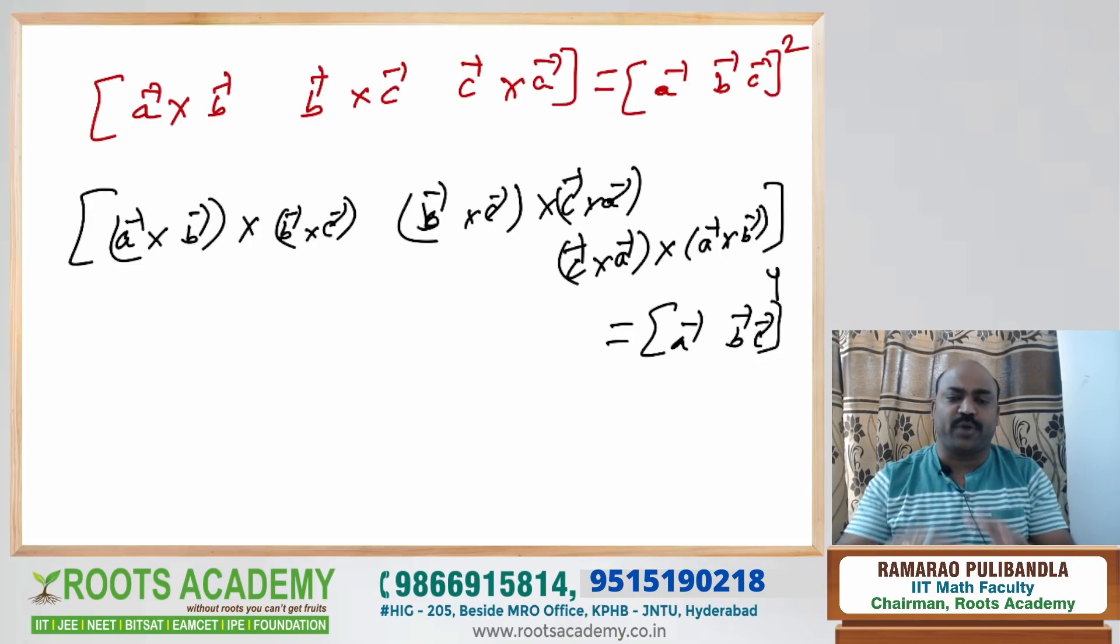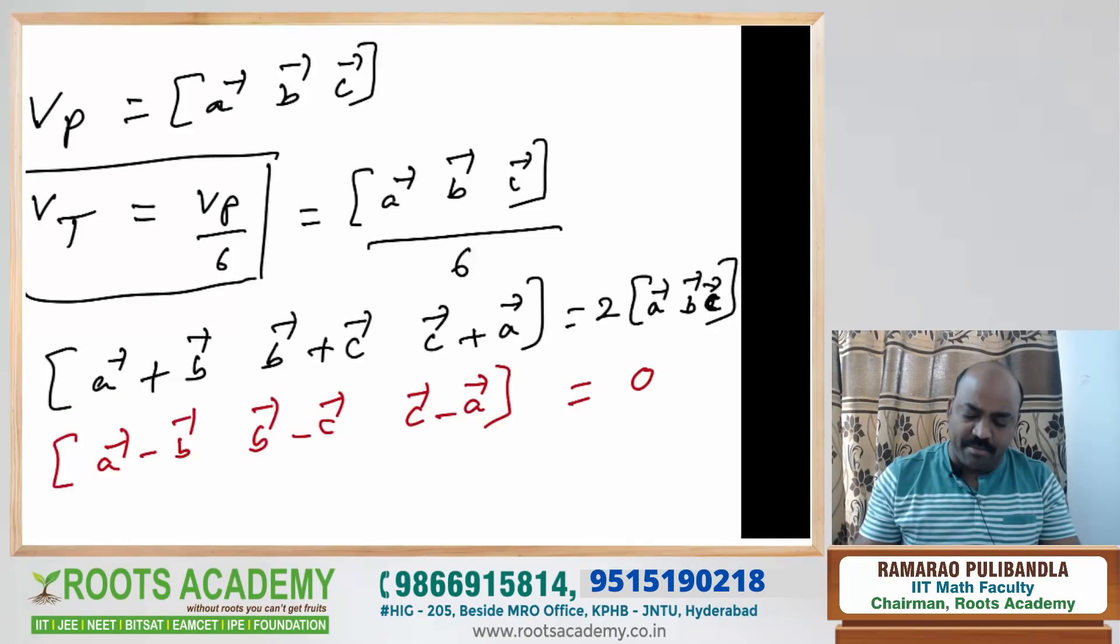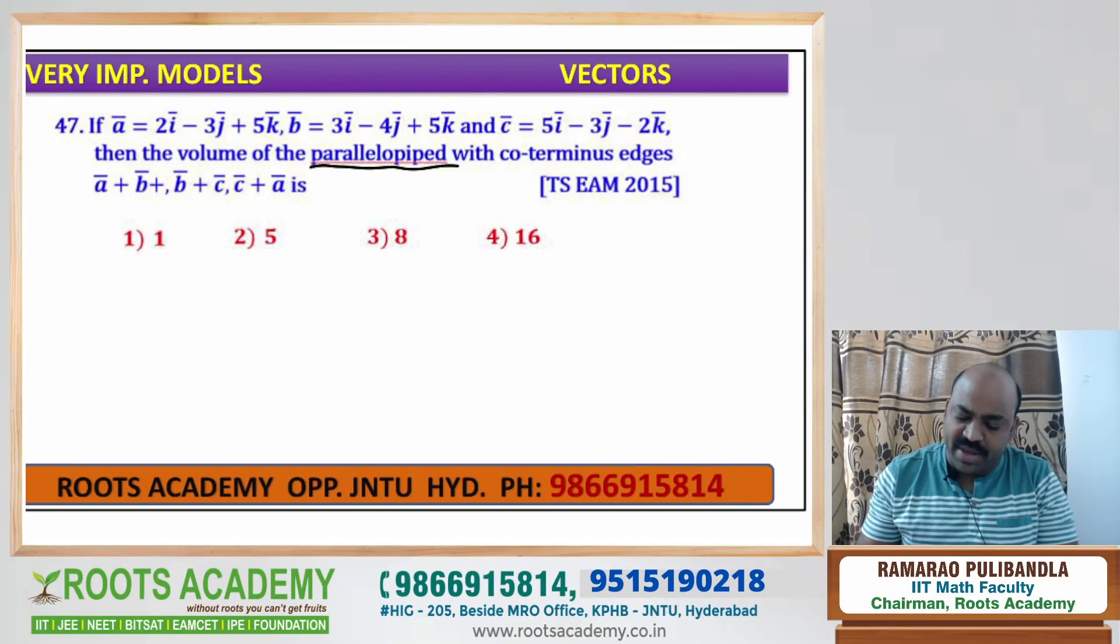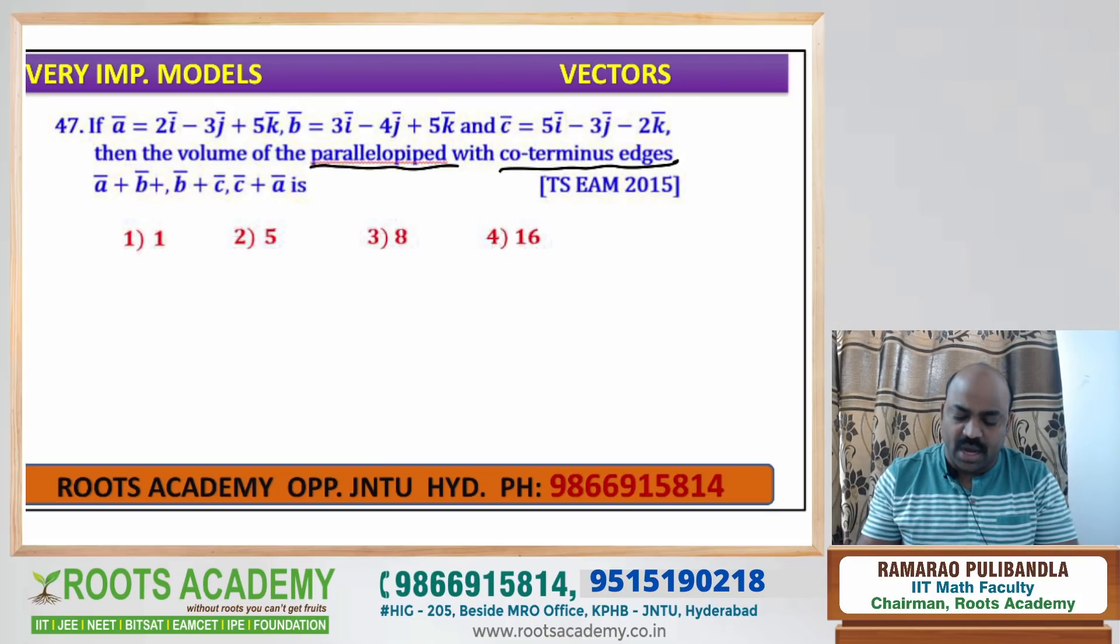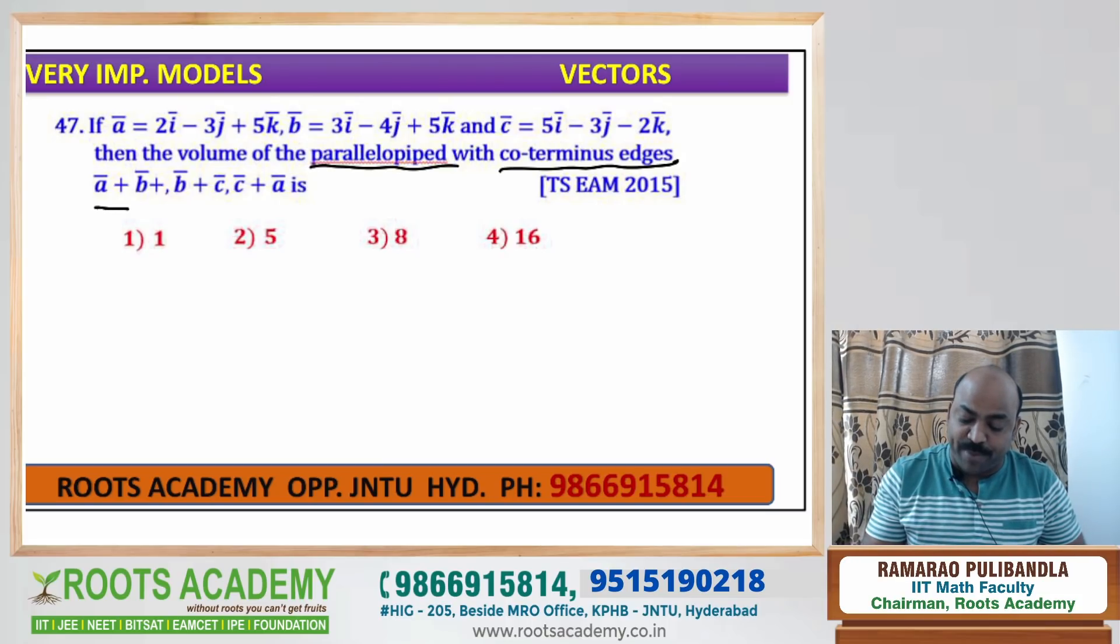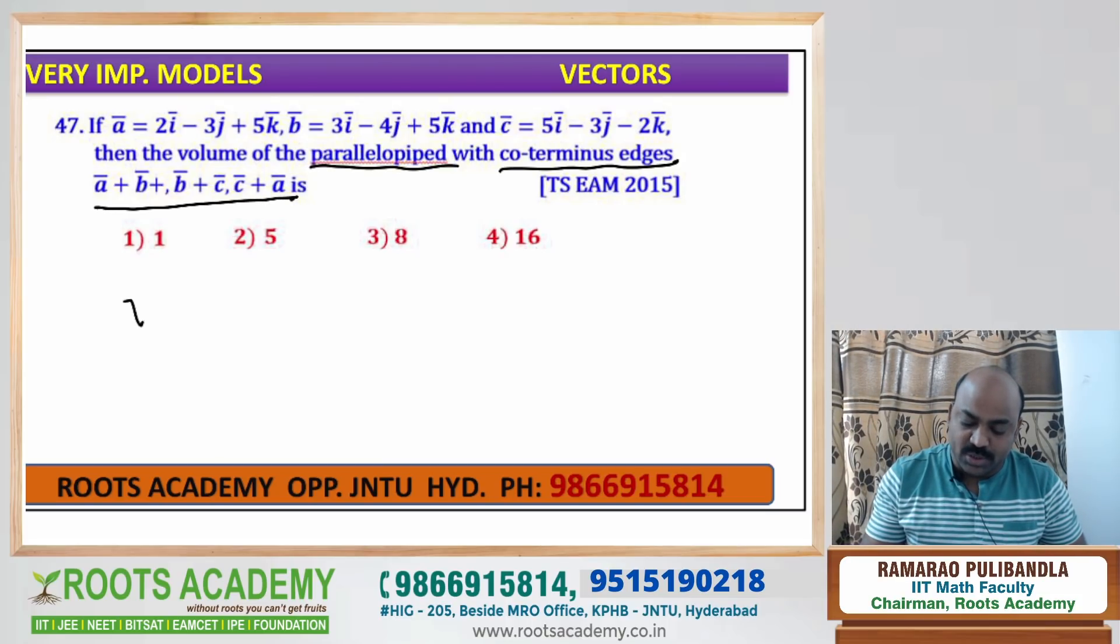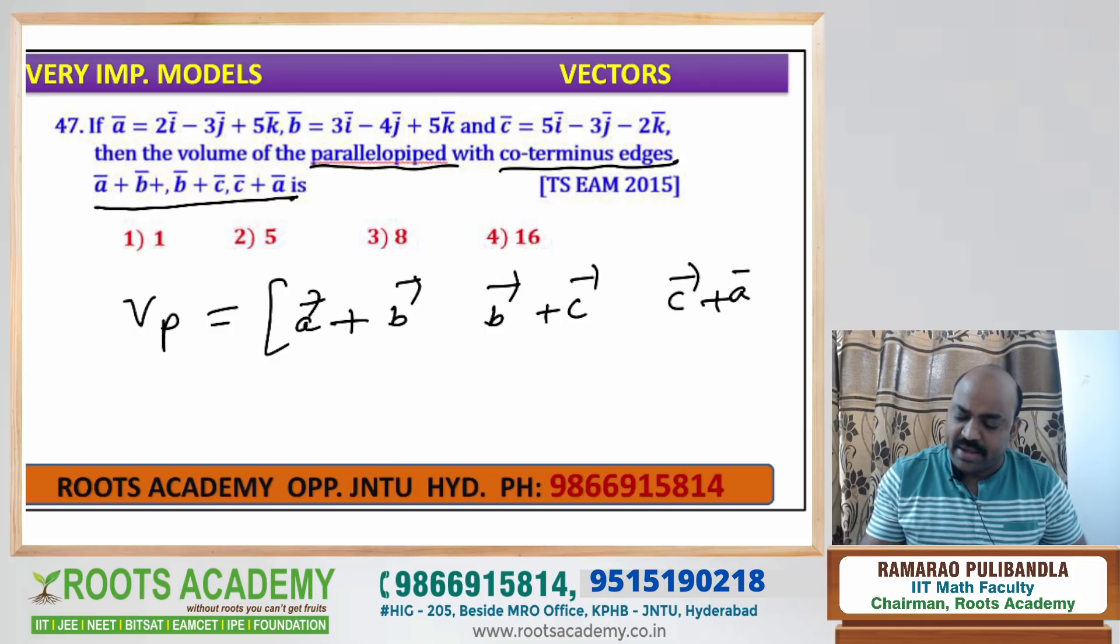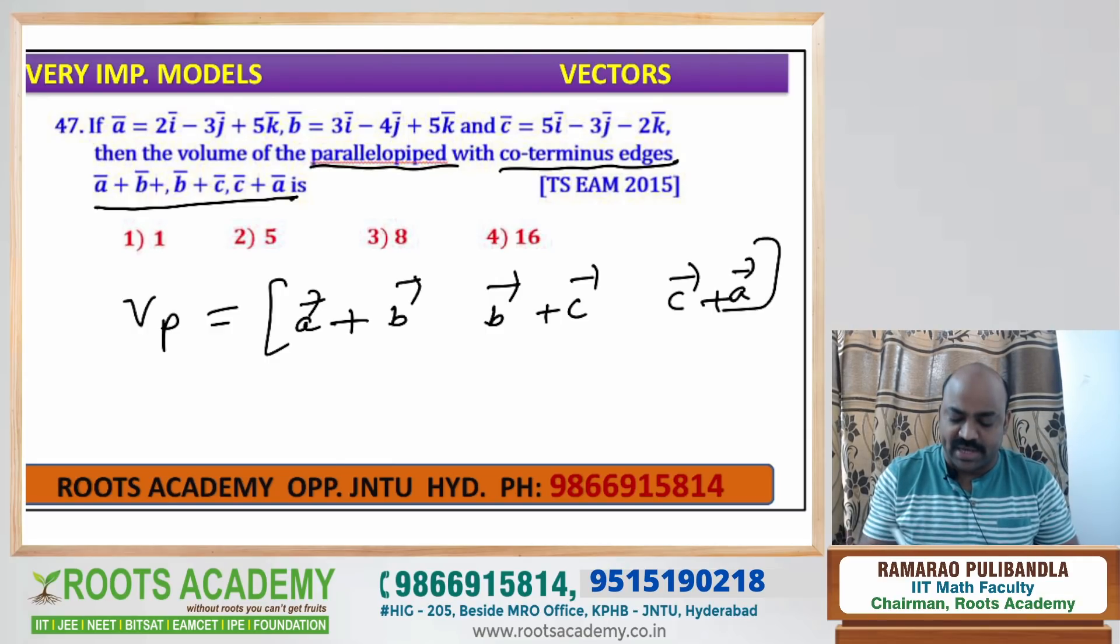Now shall we go to that question quickly? Come back to that question. So here what they give? A, b, c are the sides, two terminus edges means sides of a triangle. Then the volume of parallelepiped having this side is there. So here what he is asking is, a plus b, b plus c and c plus a. This box value is how much they are asking.